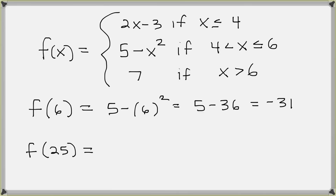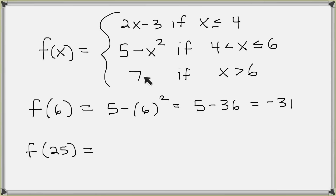Finally, we want to evaluate f of 25. We scan through each condition until we find the one that holds true for 25. The first condition — 25 is less than or equal to 4 — is false. The second condition — 4 is less than 25 and 25 is less than or equal to 6 — is false, because 25 is not less than or equal to 6. The third condition — 25 is greater than 6 — is true. The corresponding formula is just a constant, so there is no x to substitute.